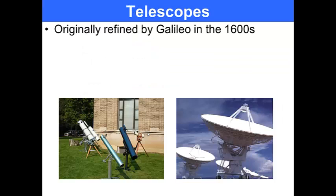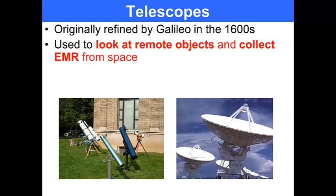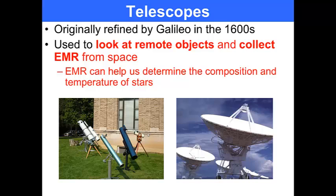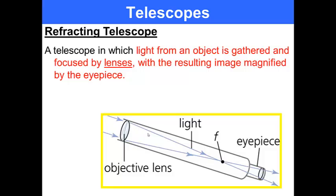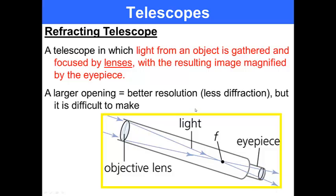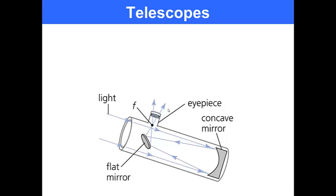Telescopes were originally refined by Galileo in the 1600s and used to look at remote objects in the sky and collect electromagnetic radiation from space. Electromagnetic radiation can help us determine the composition and temperature of stars. Refracting telescopes are telescopes in which light from an object is gathered and focused by lenses, with the resulting image magnified by the eyepiece. You have an objective lens and an eyepiece like a microscope. A larger opening gives better resolution because there is less diffraction but it is difficult to make. This is a simple telescope.